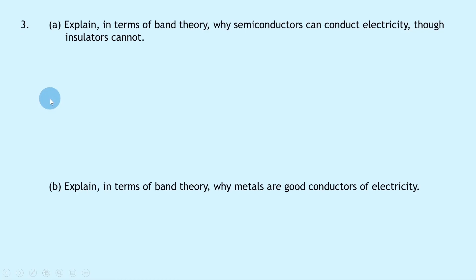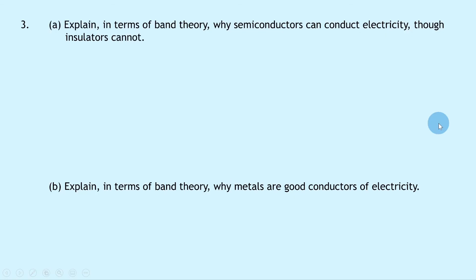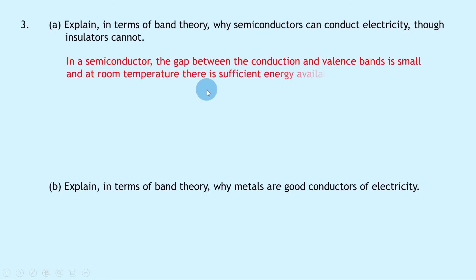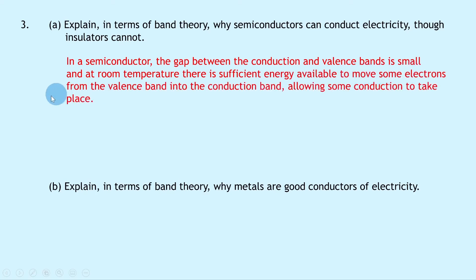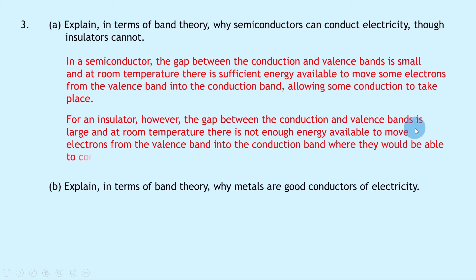Question 3 follows on from question 2. Part a says: explain in terms of band theory why semiconductors can conduct electricity though insulators cannot. Whenever we're asked to explain in terms of band theory we need to mention the key words: valence band, conduction band and electrons. In a semiconductor, the gap between the conduction and valence bands is small, and at room temperature there is sufficient energy to move some electrons from the valence band into the conduction band, allowing some conduction to take place. For an insulator, the gap is large, and at room temperature there is not enough energy to move electrons into the conduction band.